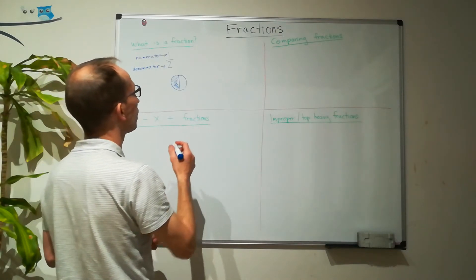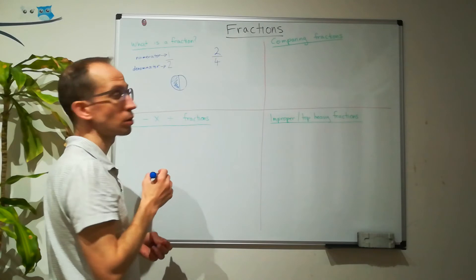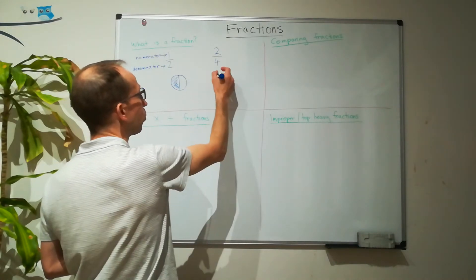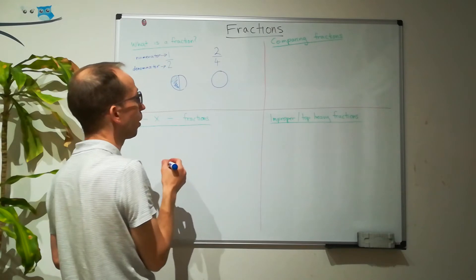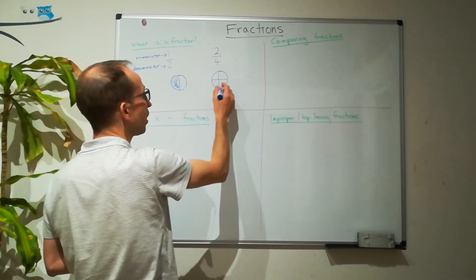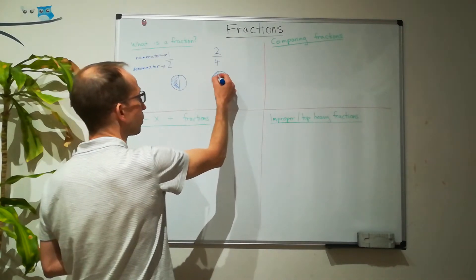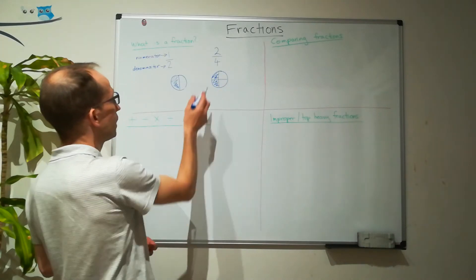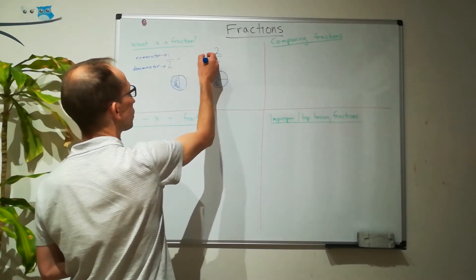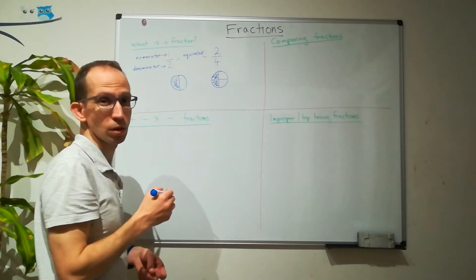Now if we've got something similar, we've got two quarters, or two over four. Similarly, we've still got one pizza, but it's now split into four equal pieces. Four equal pieces and we have two of them — one here, one here. Now we can see that this is the same as one half. So we can say that these fractions are equivalent, because they have the same value.